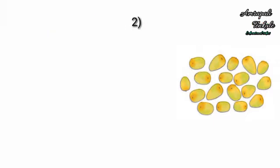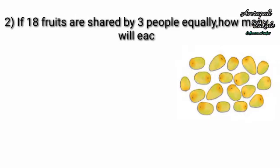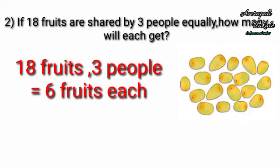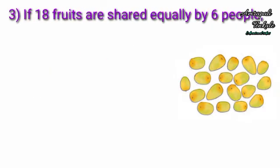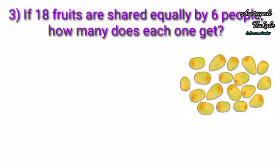If 18 fruits are shared by three people equally, how many will each get? Distribute the fruits equally among three people. Each person will get 6 fruits.